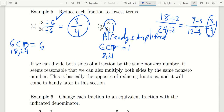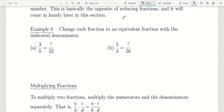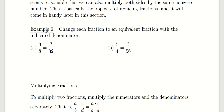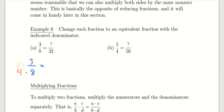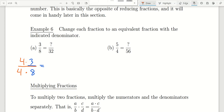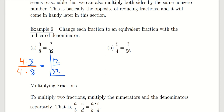We can also do the reverse process — maybe we have a fraction in simplest terms but we want to write it as an equivalent fraction with a different denominator. For example, in question 6 we have the fraction 3 eighths and we're asked to change this to an equivalent fraction expressed in terms of 32nds. To do this, we ask: to go from 8 to 32, what do we multiply the denominator by? The answer is 4. If we multiply the denominator by 4, we also multiply the numerator by 4. Four times 3 gives us 12, and 4 times 8 gives us 32, so 3 eighths is equivalent to 12 over 32.